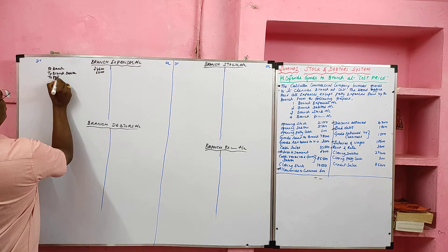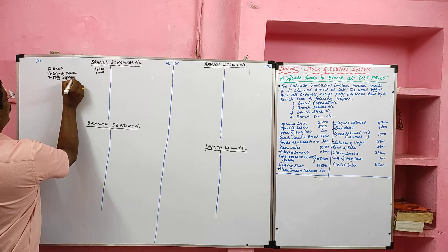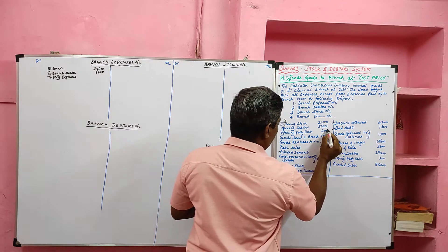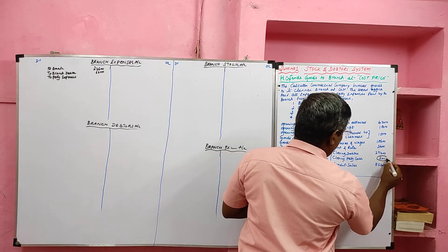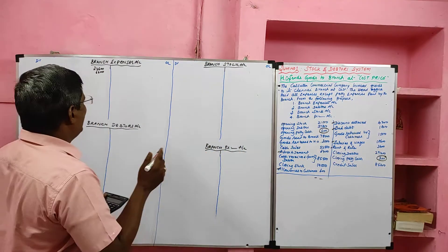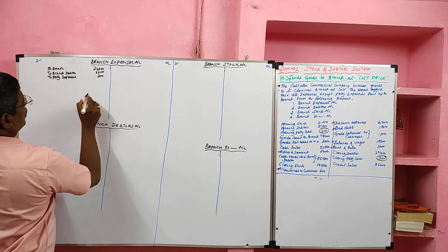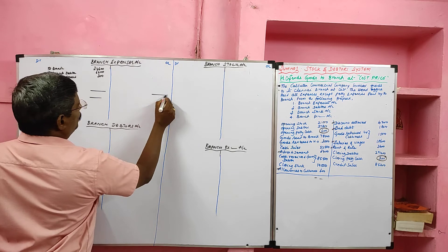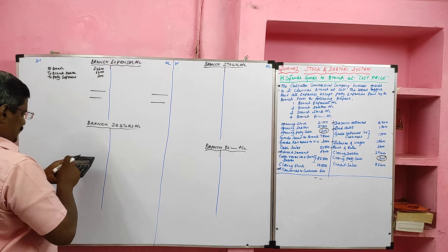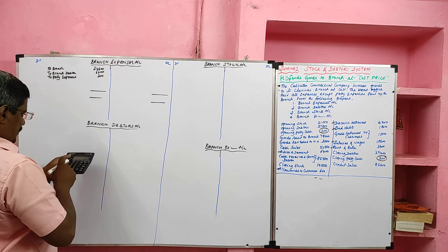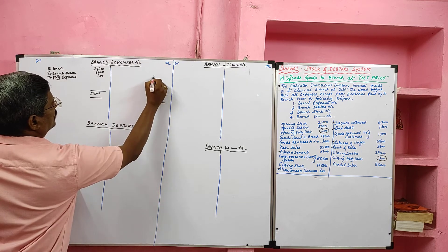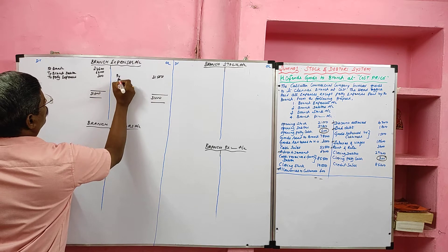Petty expenses are paid by the branch. Their value is not directly given, but we can calculate it: opening petty cash 600, closing petty cash 300. The difference between opening petty cash and closing petty cash is considered as petty expenses — its value is rupees 300. The entire branch expenses should be transferred to the Branch Profit and Loss Account. Total: 24,600 plus 6,600 plus 300 equals 31,500.